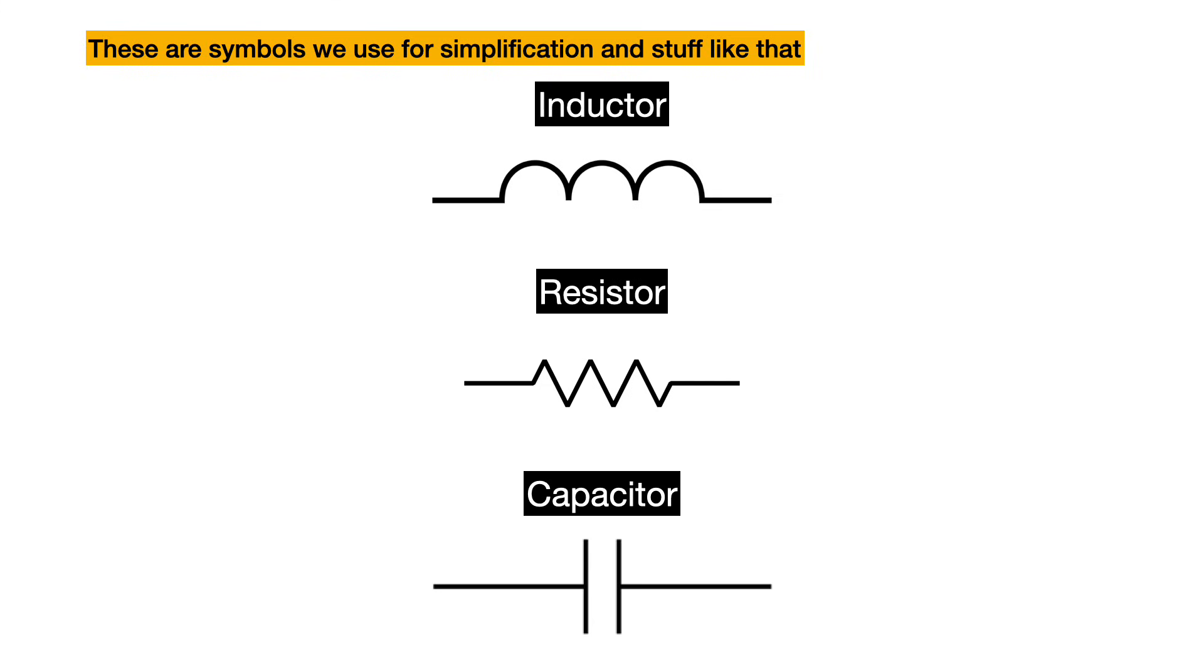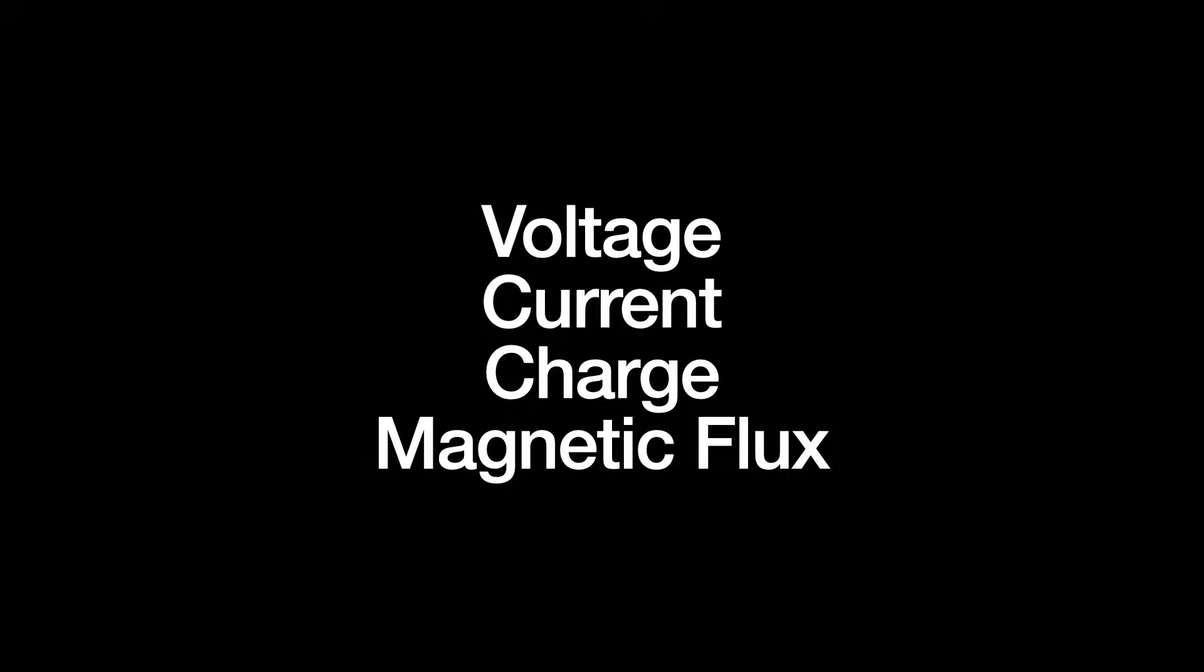You can describe their behaviors using relationships between two of four electrical variables: voltage, current, charge, and magnetic flux.